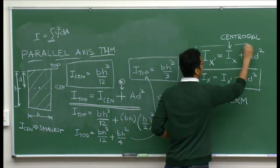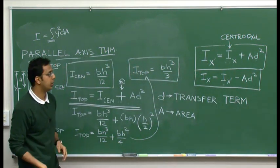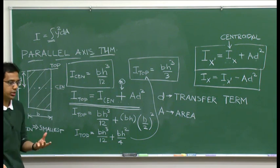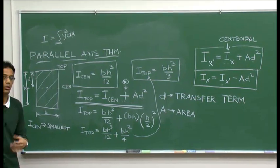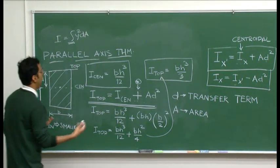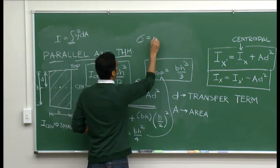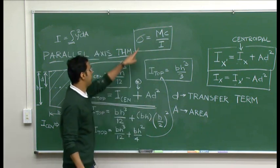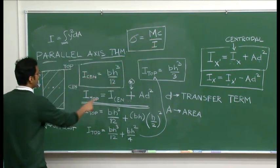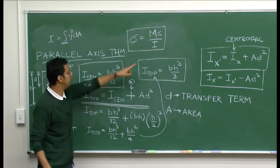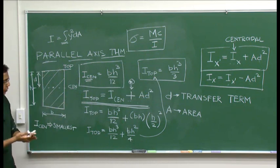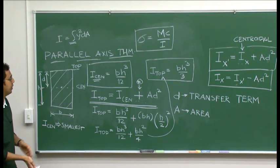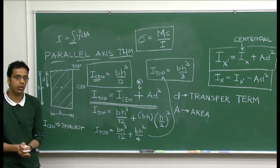In this video we discussed moment of inertia and the parallel axis theorem. A basic question is: why do we need moment of inertia? Its importance can be seen in the bending stress equation: σ = Mc/I, where the moment of inertia calculated about the centroid goes into this formula. In the next segment of videos, I will solve a couple of problems incorporating these formulas. Thank you.